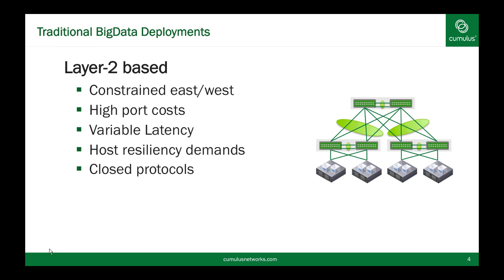Because east-west bandwidth is constrained and availability is important, this often results in needing host resiliency — having multiple NICs coming out of your server because you don't want to deal with re-replication of data in the event of any node going down. If network bandwidth constraints are removed, this becomes a lesser problem as the bandwidth is there to re-replicate or reach where the worker is much more easily than in a Layer 2 network. Above all, these solutions are often built on top of very closed protocols that only work within specific manufacturers' paired devices and don't allow you to bring in different systems and platforms as you see fit.